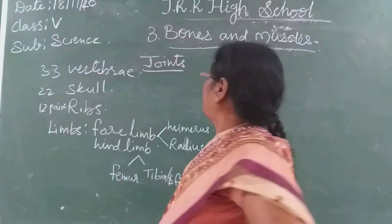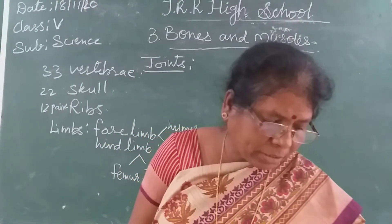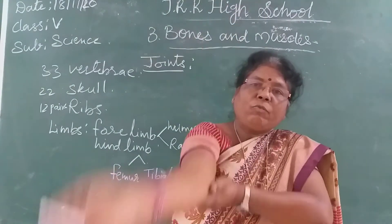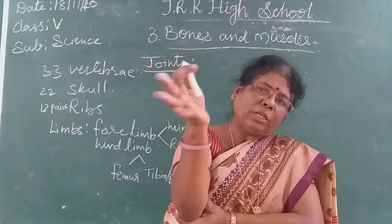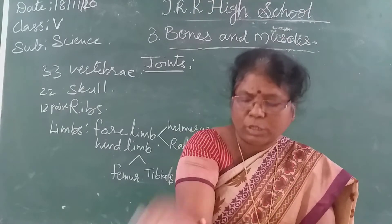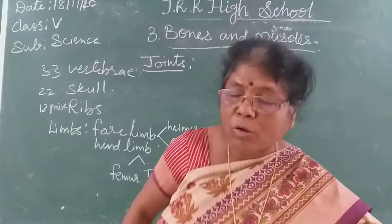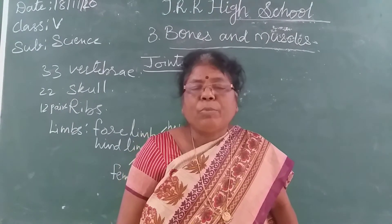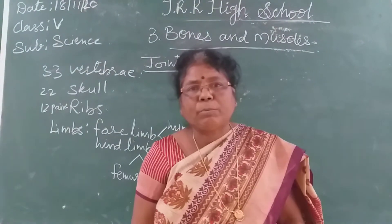Now coming to joints. Where 2 bones meet is called a joint. Long bones have a soft fatty material called bone marrow, where blood cells are made. If you don't have this elbow joint, you cannot move your hand, you cannot eat or bathe - your hand would be straight.